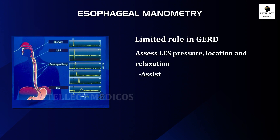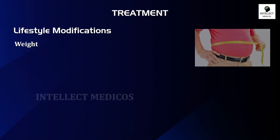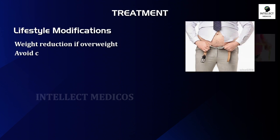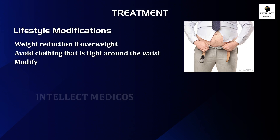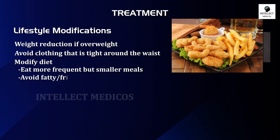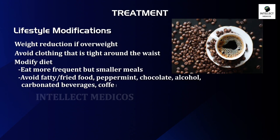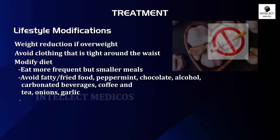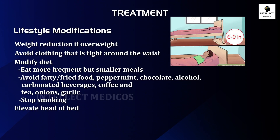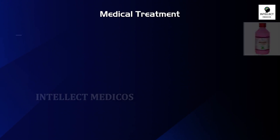The most important aspect of treatment is lifestyle modification. Weight reduction should be done if overweight. Avoid clothing that is tight around the waist. Modify your diet — eat more frequently but in smaller meals. Try to avoid fatty or fried food, peppermint, chocolate, alcohol, carbonated beverages, coffee, tea, onion, and garlic. Also stop smoking. Elevate the head of the bed four to six inches, and try to avoid eating within two to three hours of bedtime.